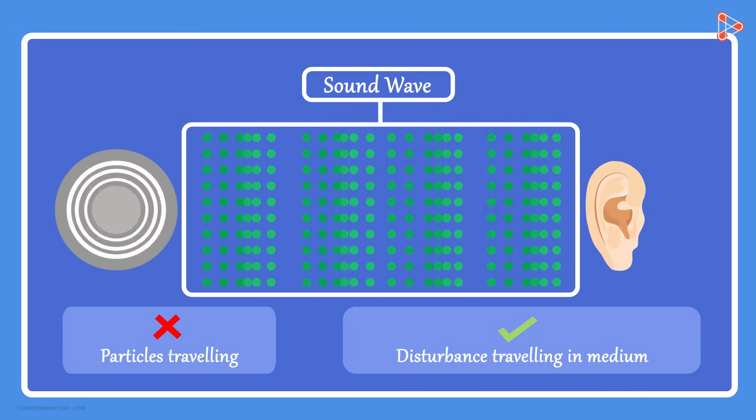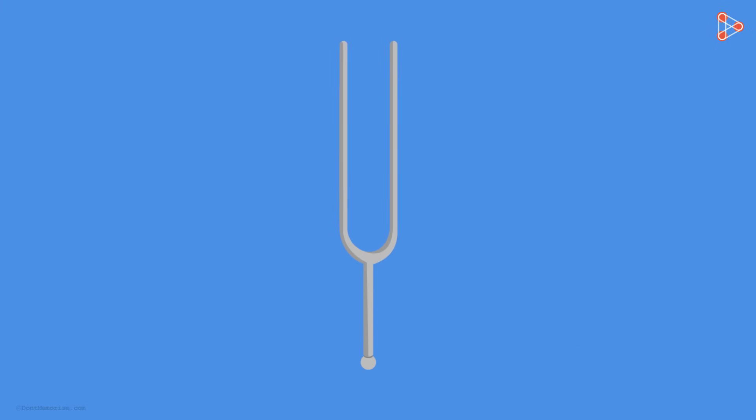But what does this disturbance look like? Let us study this with the help of a tuning fork. Here we take air as a medium of propagation. We have a tuning fork made up of steel. This shows the initial condition of the air particles of the medium when the tuning fork is in its original position, that is when the tuning fork is not vibrating.